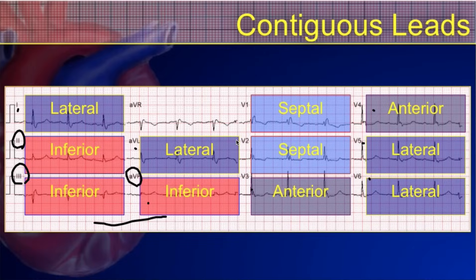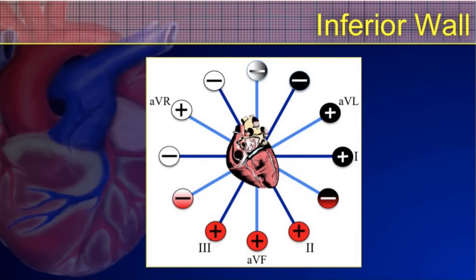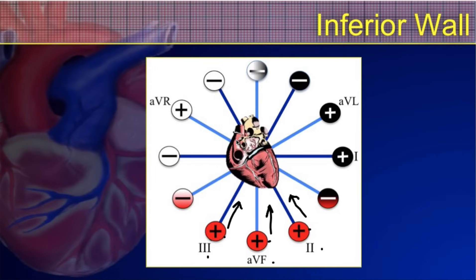Leads 2, 3, and AVF are our inferior leads. Looking at the limb leads in the frontal plane using the hexaxial reference system, each lead is assigned a positive and negative electrode giving an angle of view. For leads 2, 3, and AVF the positive electrode is at the bottom, so the camera is pointed toward the inferior wall of the heart. Any wave of depolarization moving toward the positive electrode shows up as a positive deflection on the EKG, and any electrical conduction moving away from the positive electrode shows up as a negative wave.